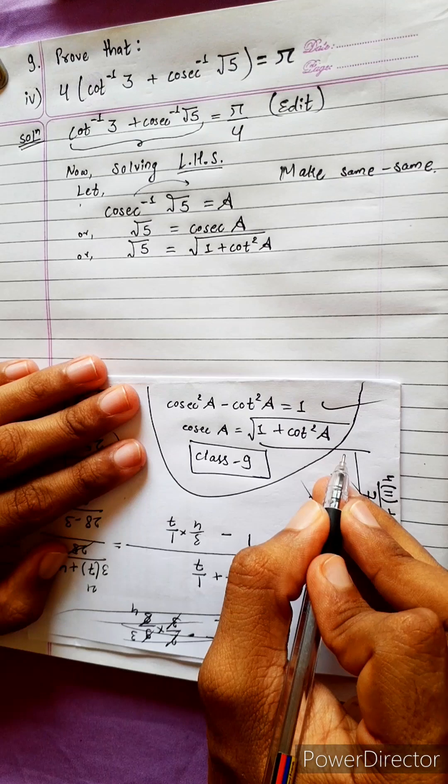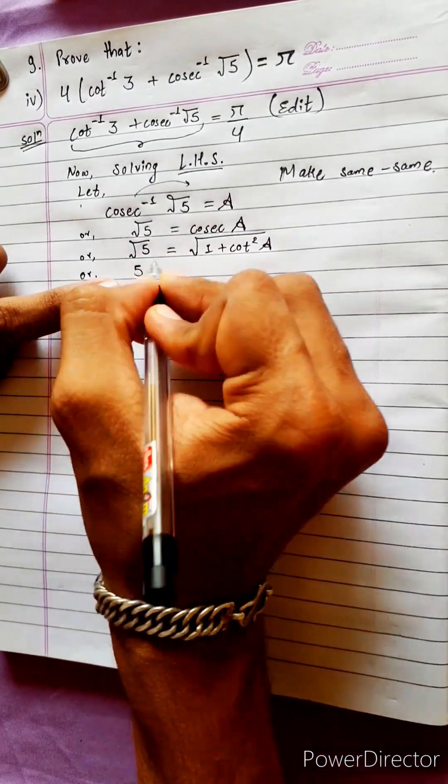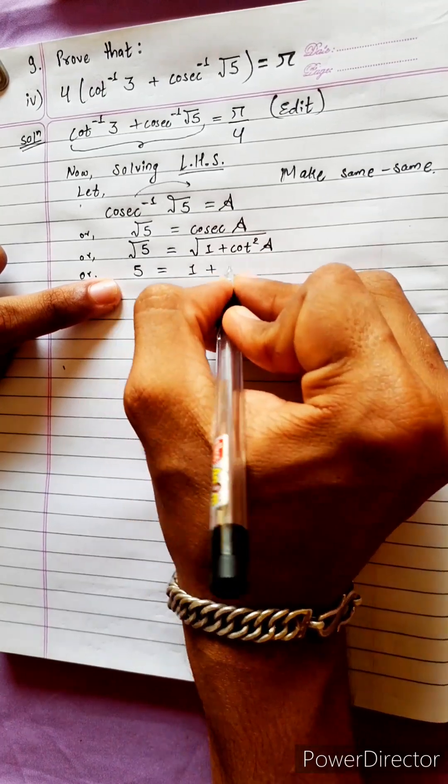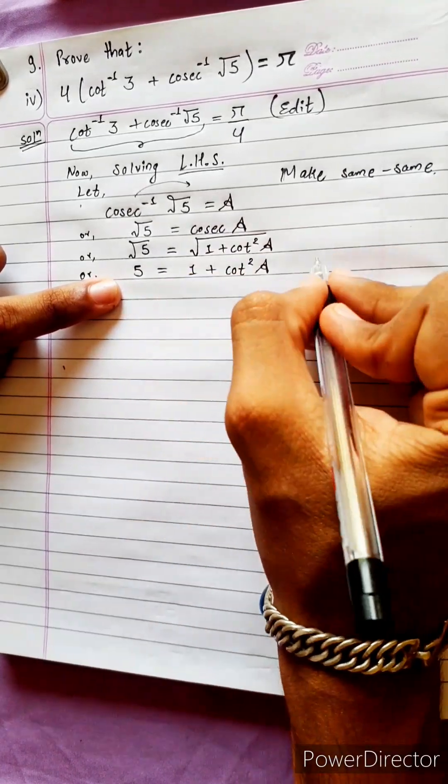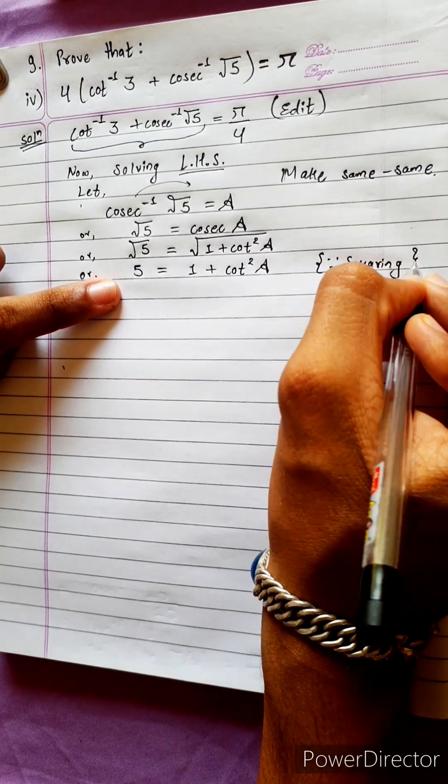Now, let's solve it. And it's 5 equals to 1 plus cot square A. What is this? Squaring both sides. On squaring both sides.